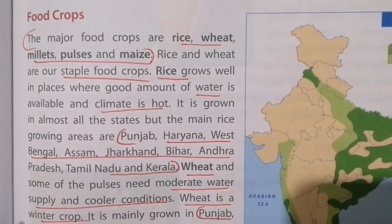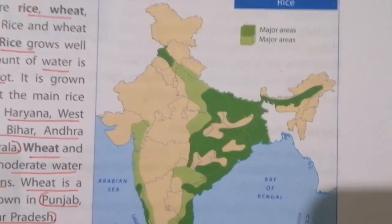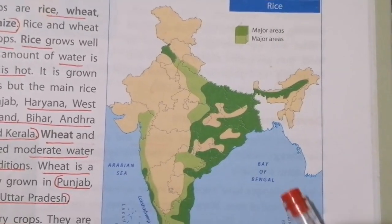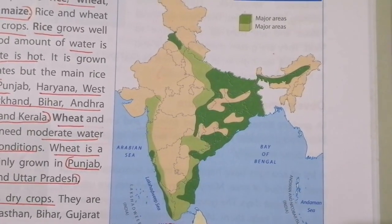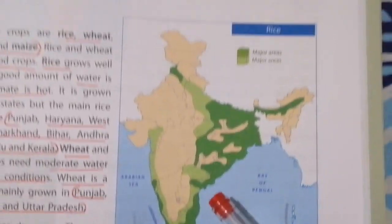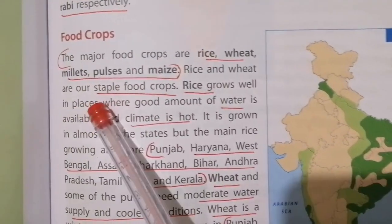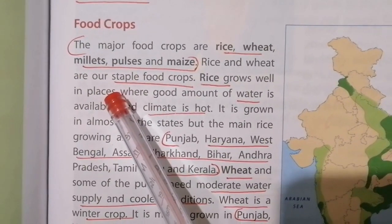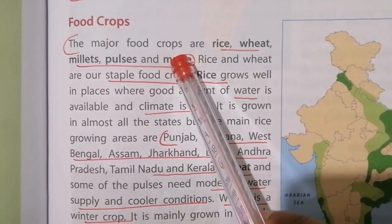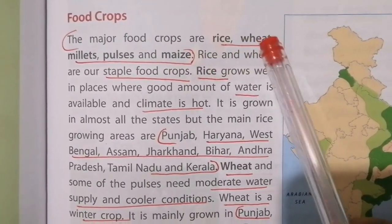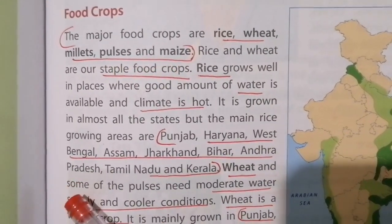Now we are going to learn about the important food crops. In this map you can see the major areas where rice is grown. The major food crops are rice, wheat, millet, pulses, and maize.